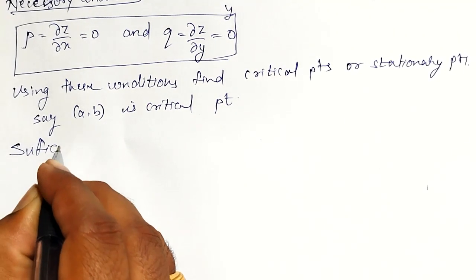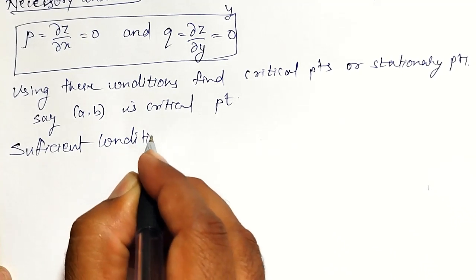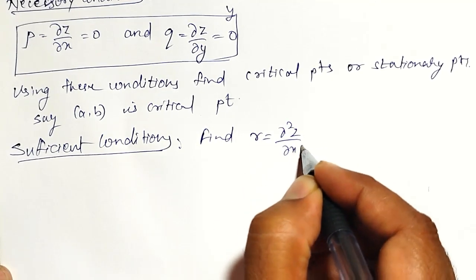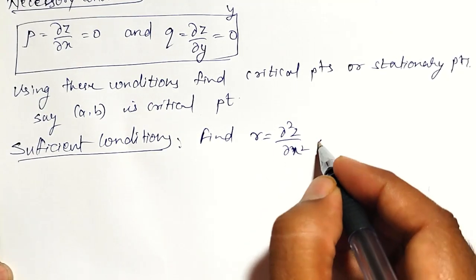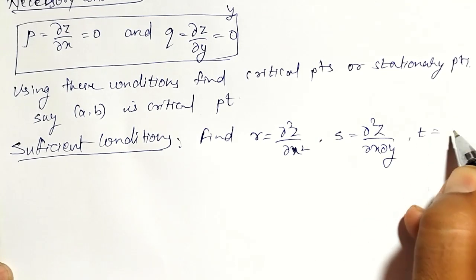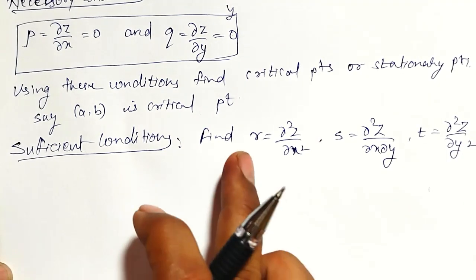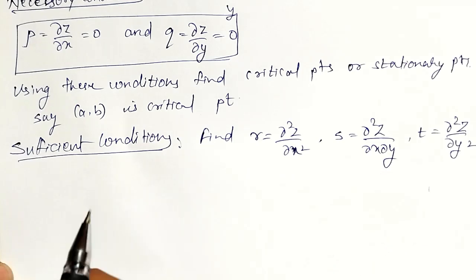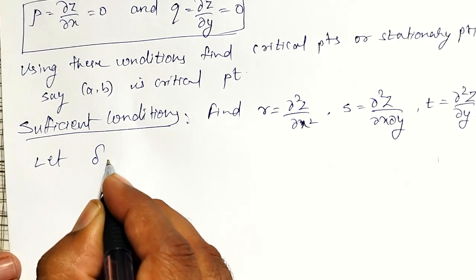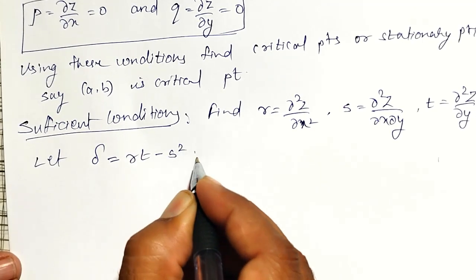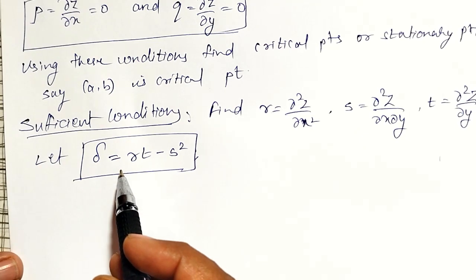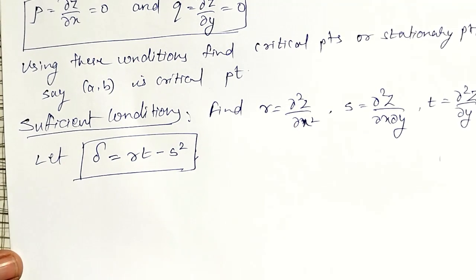For the sufficient conditions, we find: r equal to dou square z by dou x square, s equal to dou square z by dou x dou y, and t equal to dou square z by dou y square. Using r, s, t at point a, b, we decide whether it is maximum or minimum. We define delta equal to r t minus s square.